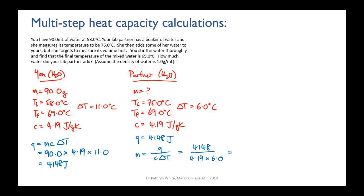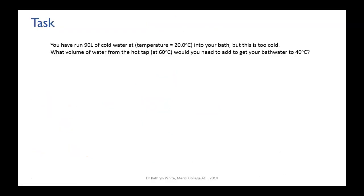That gives a mass of 165 grams. Checking sig figs: your water values give three, three, and three; for the partner's water the temperature subtraction gives two sig figs and her heat capacity is three. So two sig figs is our final answer, rounding 165 to 170 grams. She added 170 grams of water at 75 degrees Celsius to your 90 grams at 58 degrees Celsius, resulting in 260 grams of water all at 69 degrees Celsius.